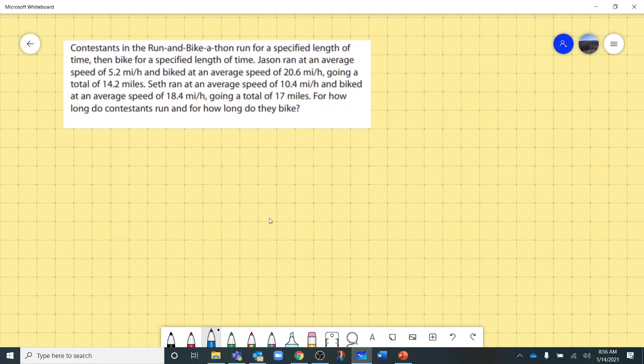Jason ran at an average speed of 5.2 miles per hour and biked at an average speed of 20.6 miles per hour, going a total of 14.2 miles.